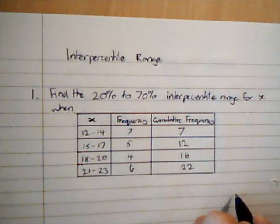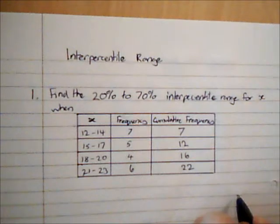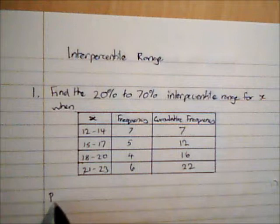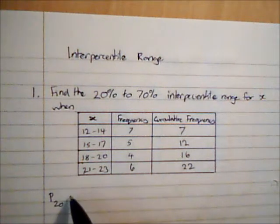Then I am going to interpolate to find a value for the 20% and 70% interpercentile range. I am going to use P to represent that, and P20 to represent the 20th percentile.